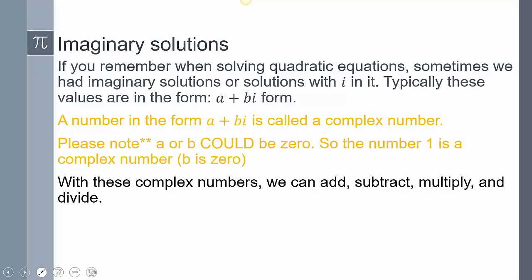As we're going through polynomials, we're going to be in this realm of complex numbers. We would say this value a is our real part and this bi is the imaginary part. Please note a or b could be zero. So for example, if b is 0 and a is 1, 1 + 0i, well 1, that's a complex number.